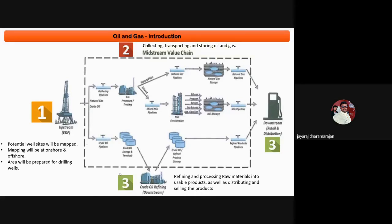The oil-water mixture is separated using a separation process. After separation, the crude oil is transferred to crude oil storage areas or terminals. It is transported through oil pipelines or by other transport facilities.